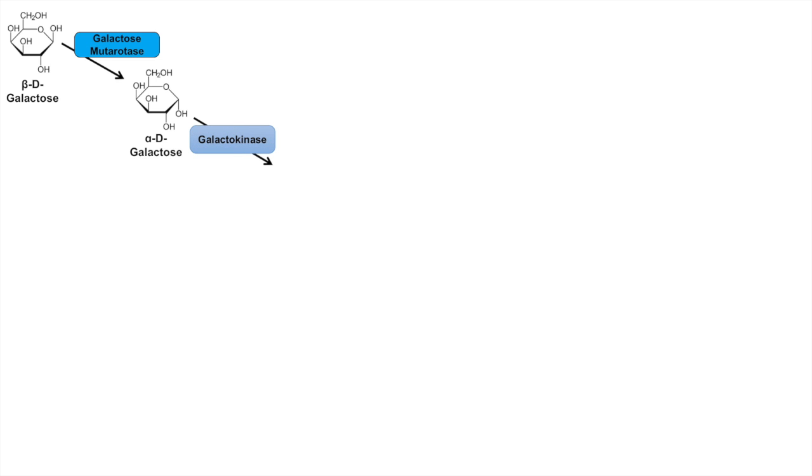Now once we have alpha-D galactose, the alpha-D galactose can then be processed by the enzyme galactokinase to form galactose 1-phosphate. The phosphate group is added to carbon-1, and that phosphate group actually comes from an ATP, which actually converts the ATP to an ADP. So once we have a phosphorylated galactose, the galactose is sequestered to that cell.